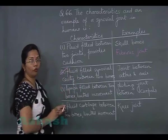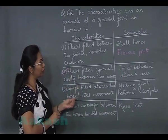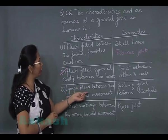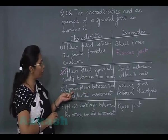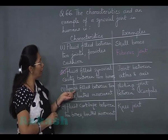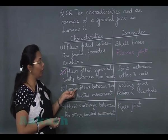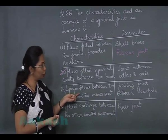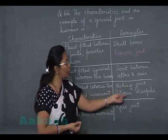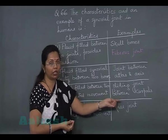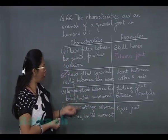So this is the correct answer. The other option mentions lymph filled between two bones — this is wrong because lymph is a tissue fluid, not a fluid between joints. Although the example of a gliding joint between carpals is certainly a synovial joint, the characteristics stated are wrong.